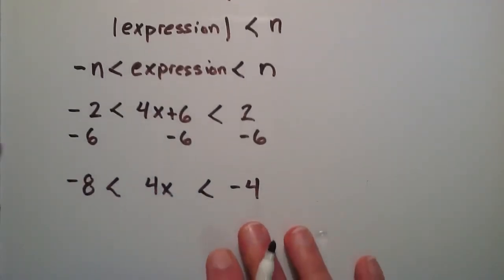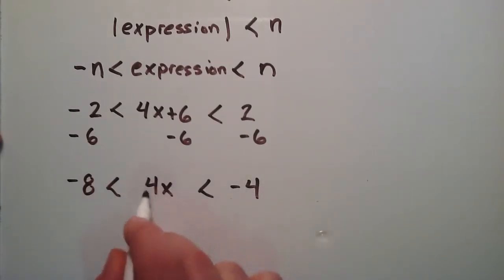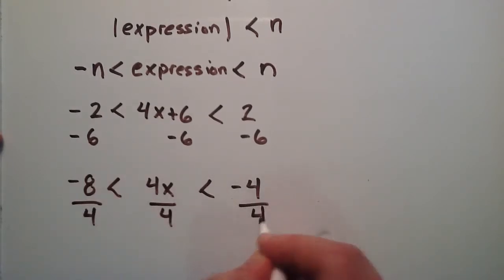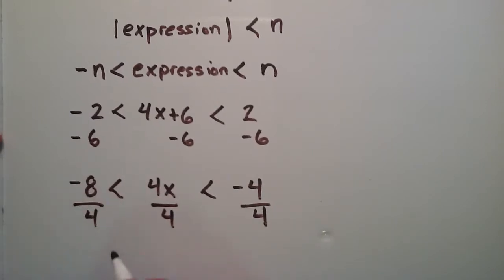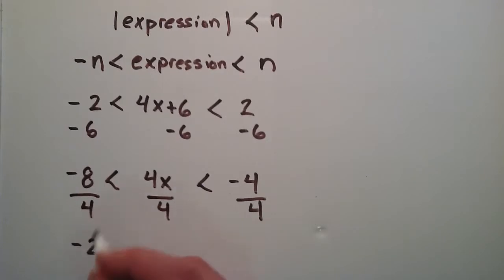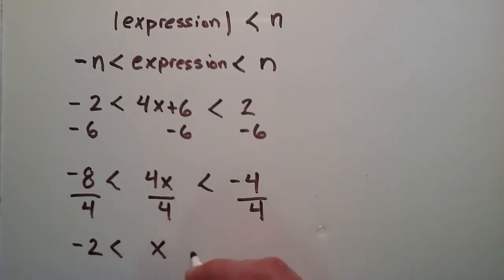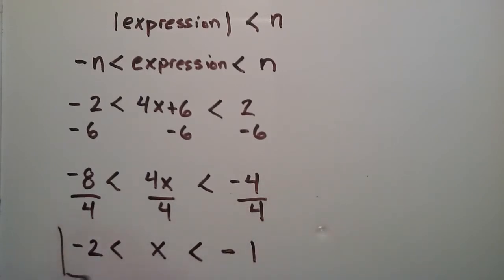Now we divide all three terms by a positive 4 to get x by itself in the middle. Negative 8 divided by 4 gives us negative 2. That's less than 4x divided by 4, which is x. And x is less than negative 4 divided by 4, which is negative 1.